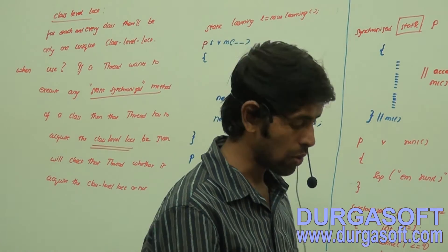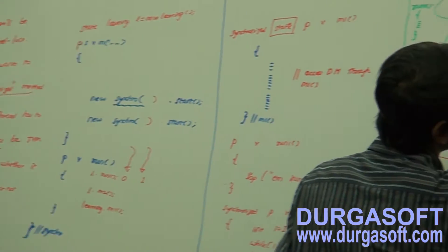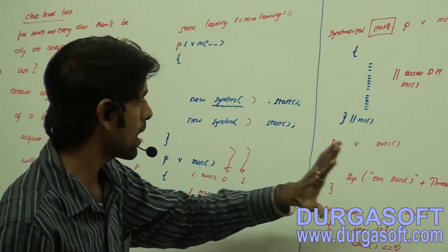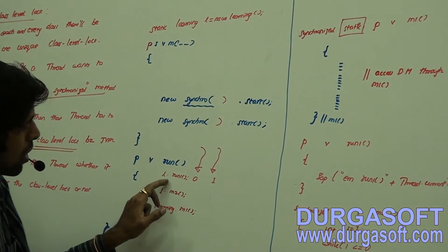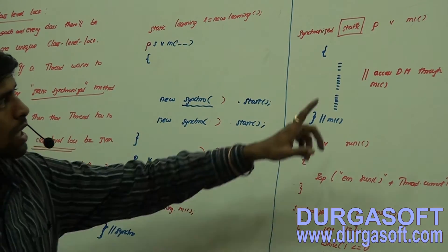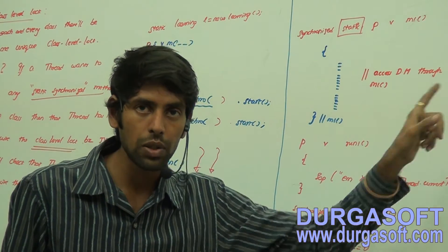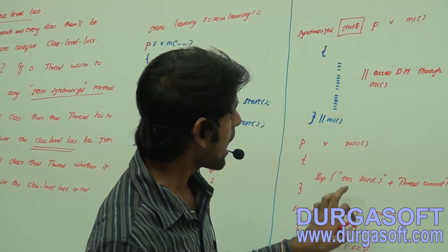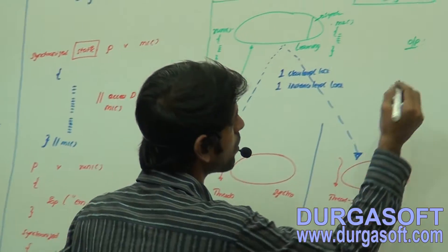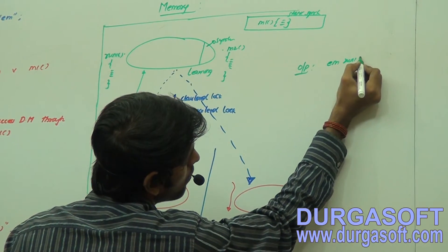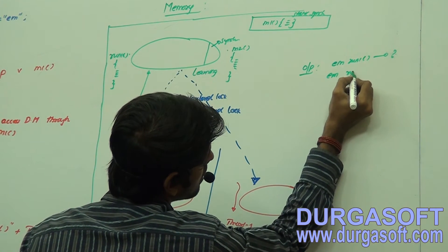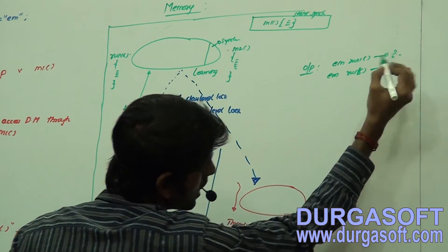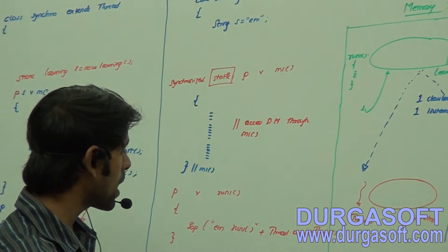Now let us trace the output. Two threads have been started and the run method is going to execute. What is `l.runOne()`? It is a normal instance method. In order to execute that method, threads are not recommended to acquire the lock. So we are going to see 'I am run one' printed by thread zero or thread one — this is guaranteed — for two times.